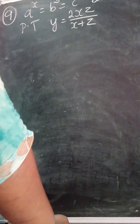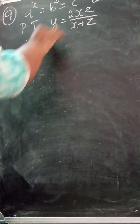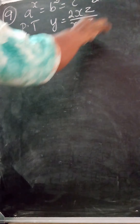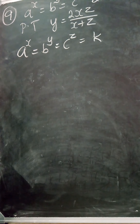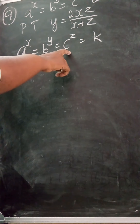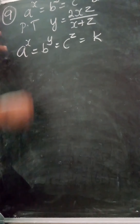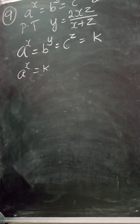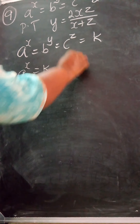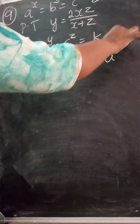What I am going to do is take a^x = b^y = c^z = k, setting all three equal to a common letter k. So a raised to the power of x is equal to k. Using the law that the nth root of a equals a raised to the power of 1/m, I can convert: a equals k raised to the power of 1/x.